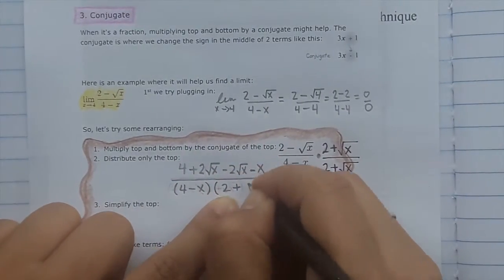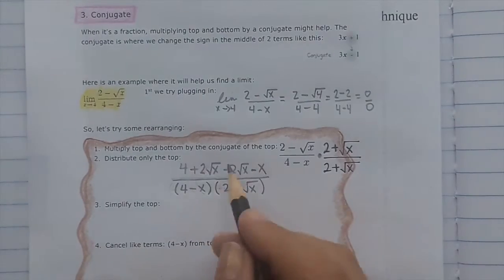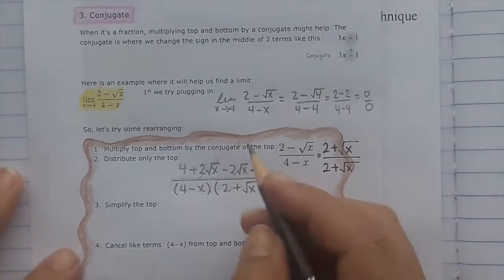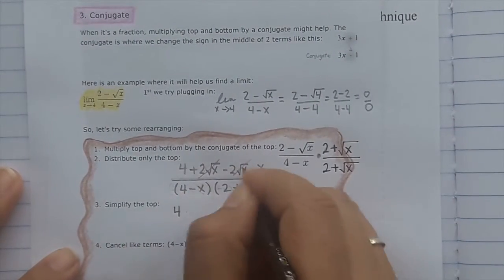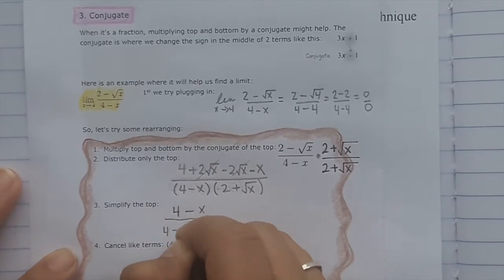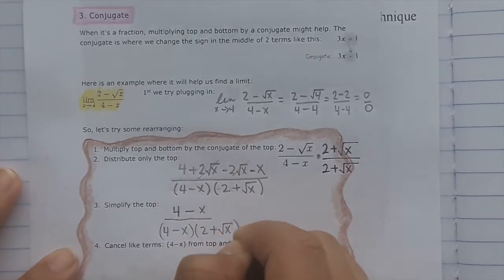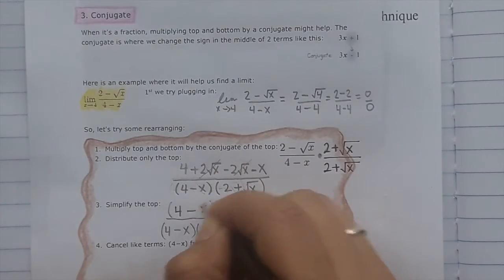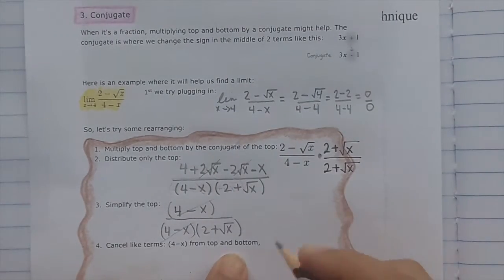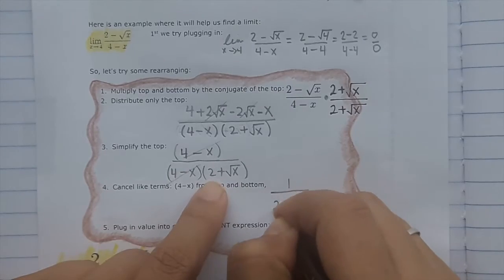Don't do anything to the bottom — leave it exactly the same. Simplifying the top, the 2 radical x terms cancel, and you're left with 4 minus x on top and 4 minus x on the bottom. Those cancel, so you're left with 1 over (2 plus radical x).